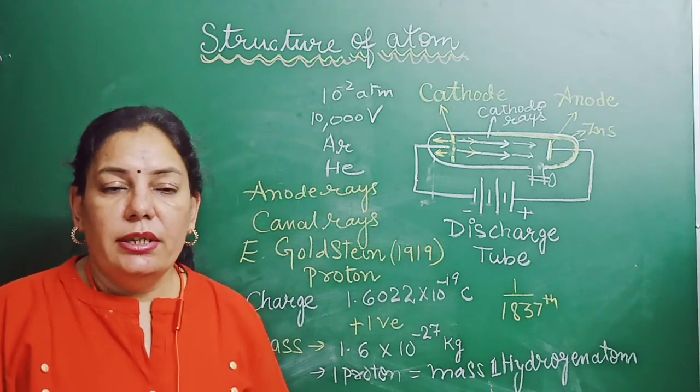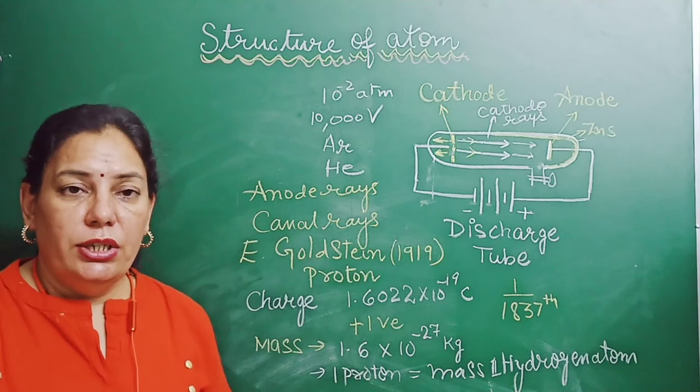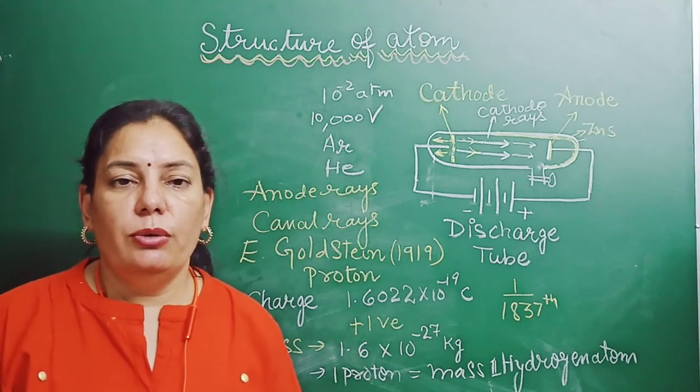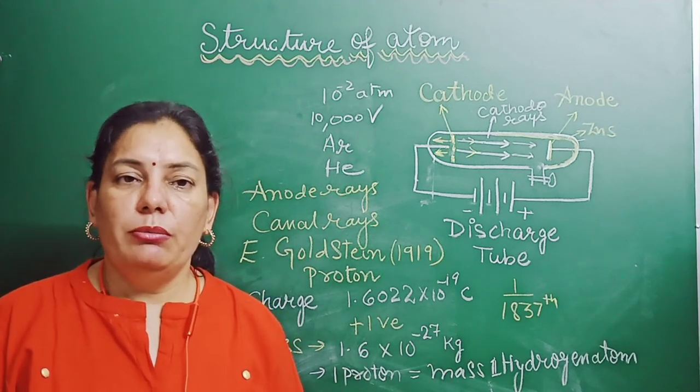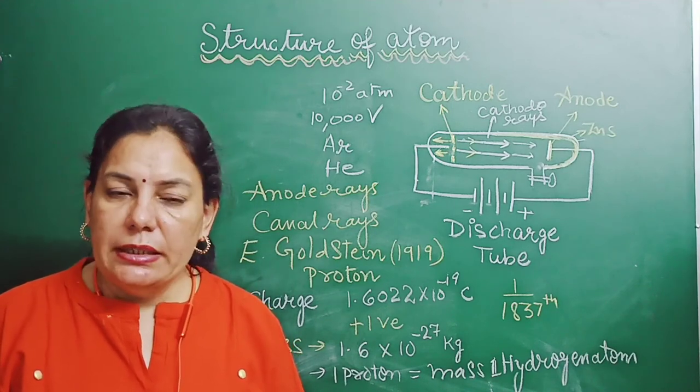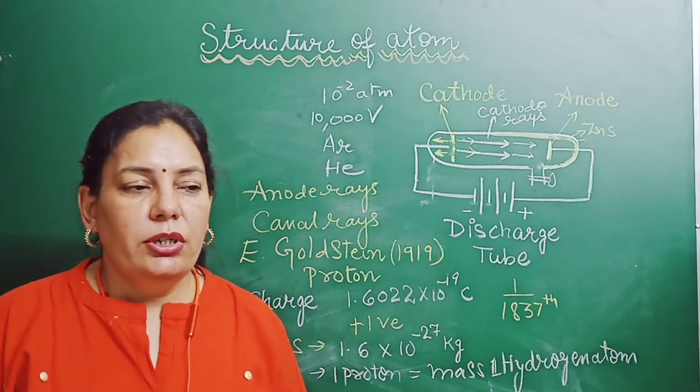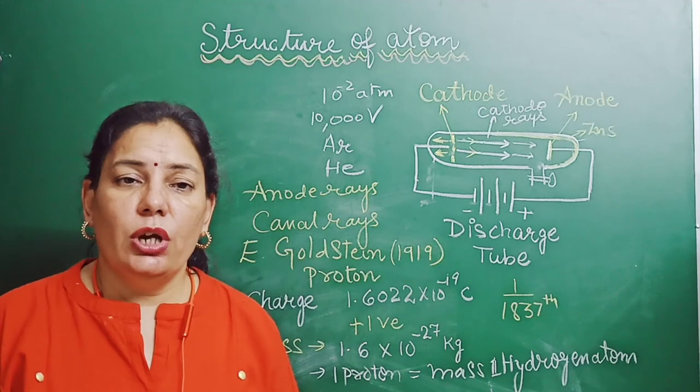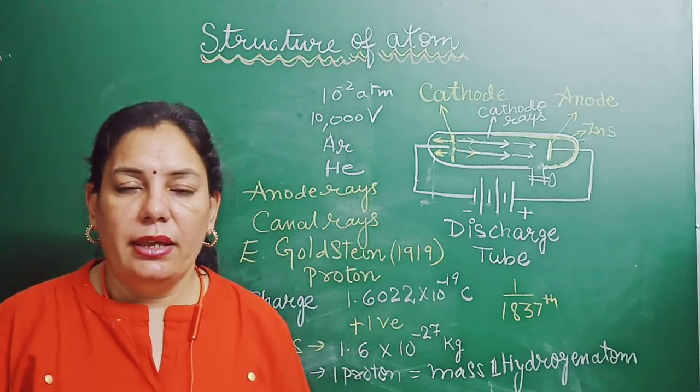These are the two experiments which led to the discovery of protons and electrons. The neutrons were discovered after J.J. Thomson proposed the structure model of atom. About J.J. Thomson model and Rutherford model we will discuss in our next video. Children, if you have any doubt regarding this topic, you can ask your doubt in comment box. Thank you.